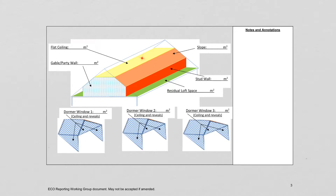You've got the flat ceiling area, cable and party wall. As with the EPC scores and the previous scoring, you still need to either insulate the cable and the party wall or deduct them from the deemed score as a percentage. You have the sloped area, the studs, and then the residual areas at the side.